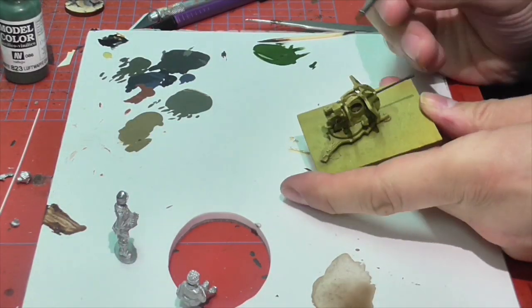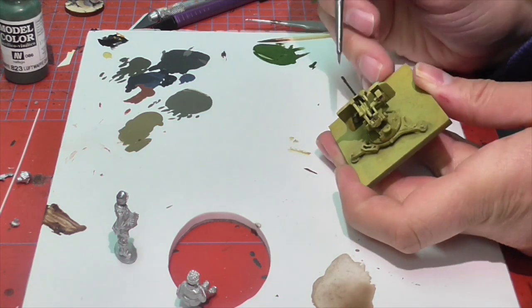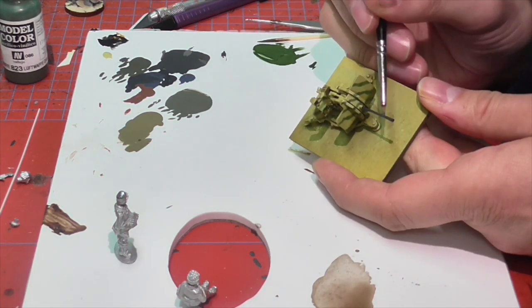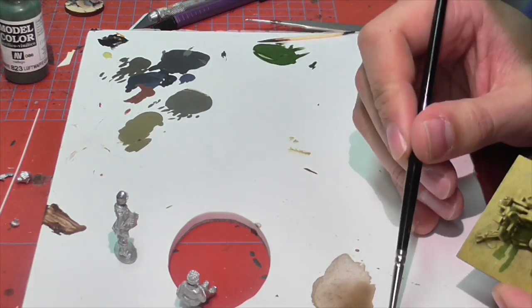Then, Jasper very lightly and quickly did a little highlighting on the top of the gun barrel and the cartridge box using some Vallejo German Grey.